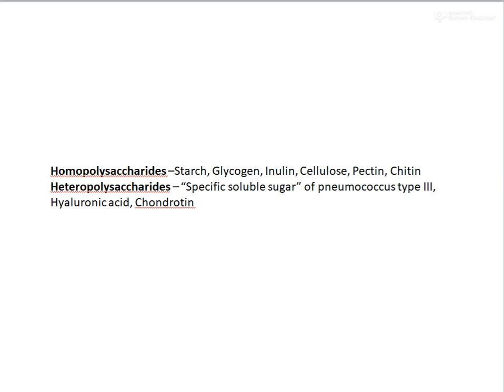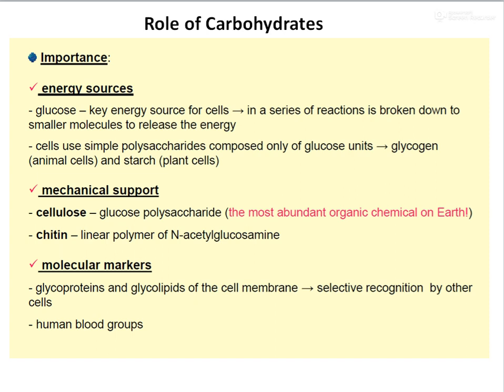Carbohydrates play an important role within the living body. They can serve as energy sources — glucose is carried through our blood to every cell to generate energy. We also have storage units of glucose as glycogen in animal cells, and starch as an energy source in plant cells. Carbohydrates can also serve as mechanical supports: cellulose, a glucose polysaccharide, is found in plants, and chitin, consisting of N-glucosamine (a derivative of glucose), is found in prawn shells and crustaceans. Carbohydrates also serve as molecular markers, for example as glycoproteins or glycolipids of the cell membrane for selective recognition of other cells, and for identification of various blood groups.